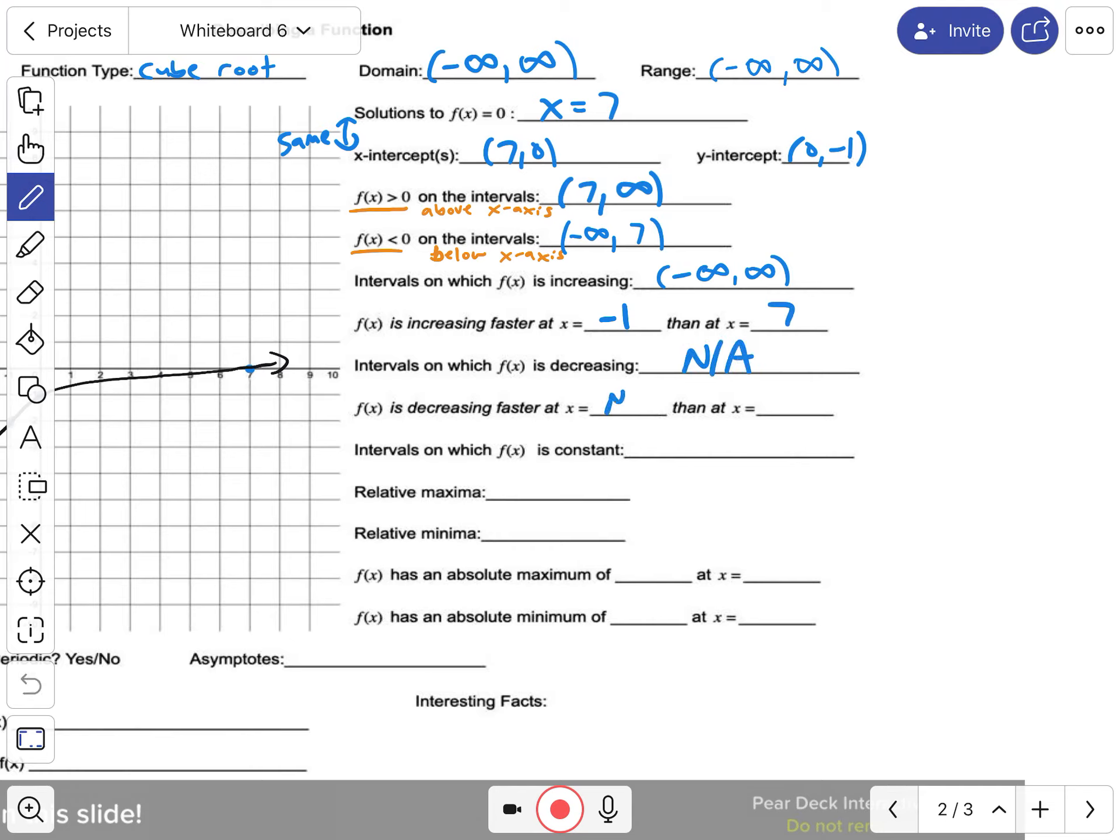Decreasing? It's not decreasing, so I'll put not applicable. Constant? That just means it's a horizontal line straight across like that, which does not exist here.